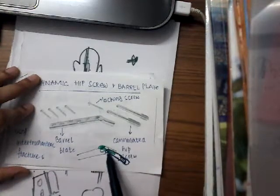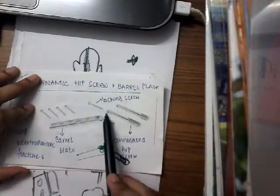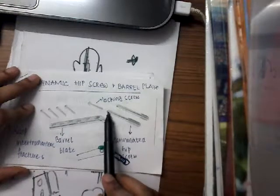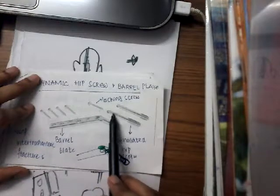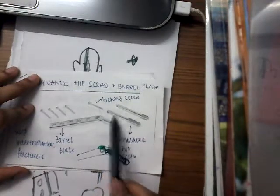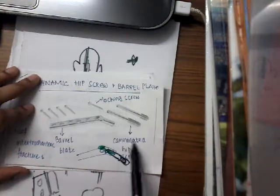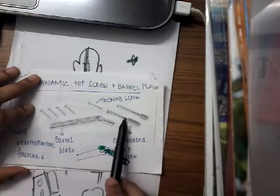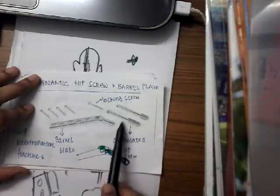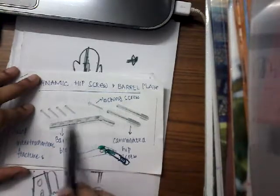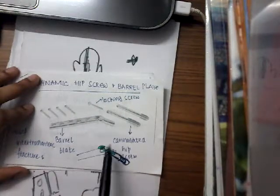This is the cannulated hip screw. Inside in the middle there is a hollow space — that is the reason why it is called a cannulated hip screw. This cannulated hip screw is fit into the barrel plate.